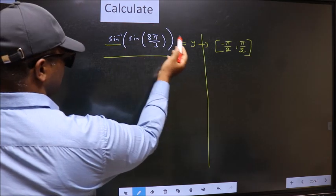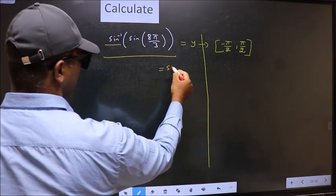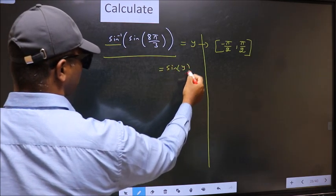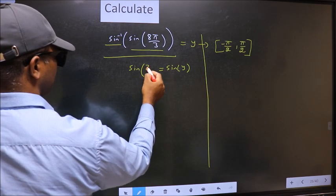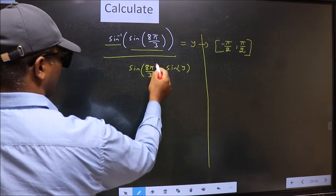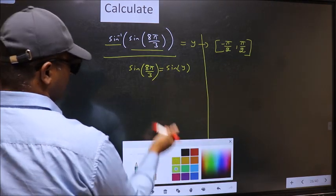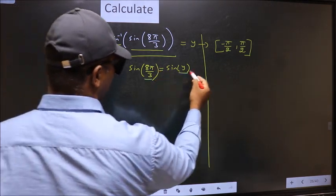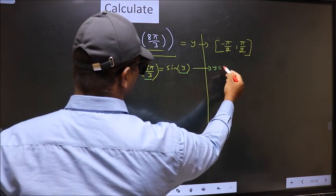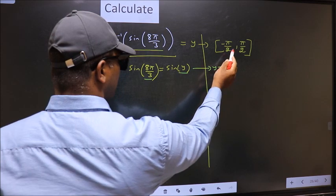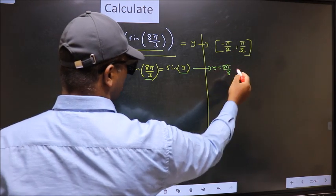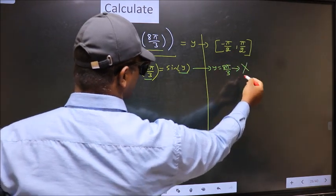I shift sin inverse to the other side. It will become sin y and this no change. Now compare both sides. We get y value to be 8π/3. Does 8π/3 lie in this interval? No. So we should reject this answer.